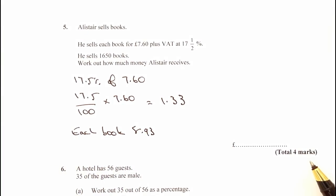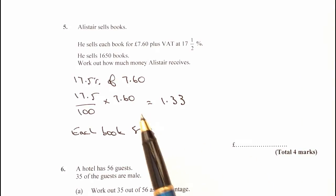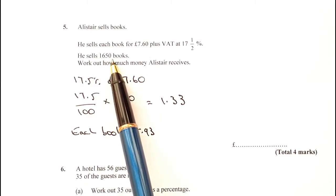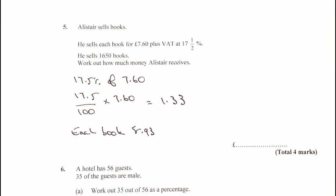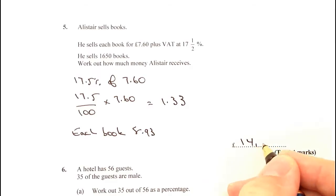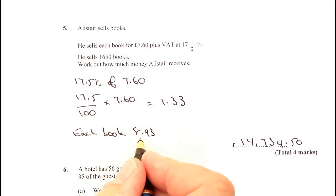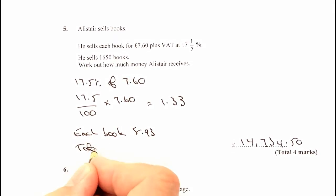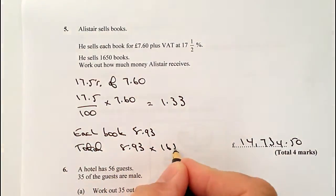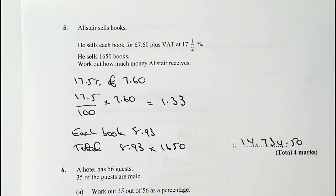Now you will notice this is a four-mark question, so just be very clear on what you're doing. The bit that will make the extra marks is there are actually 1,650 books altogether. So if I multiply 1,650 by £8.93, I'm going to get the total amount of money that Alistair receives, which is £14,734.50. So my total is £8.93 multiplied by 1,650, and that gives us that total.